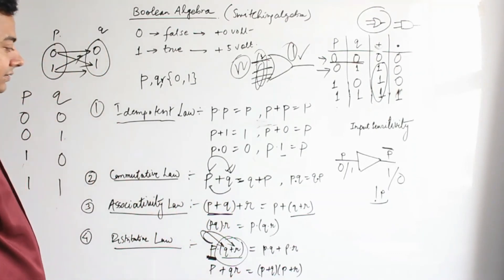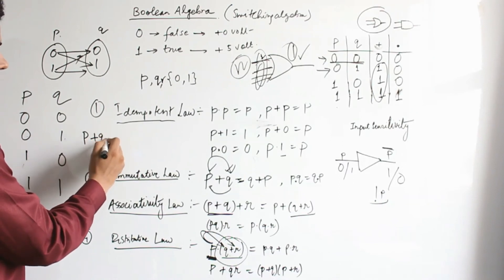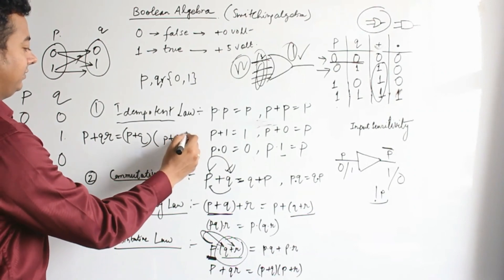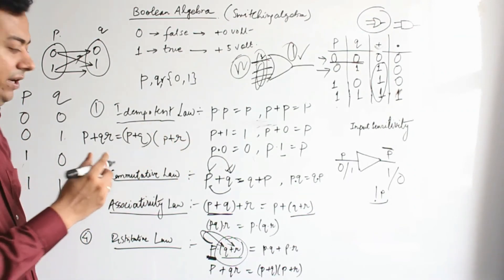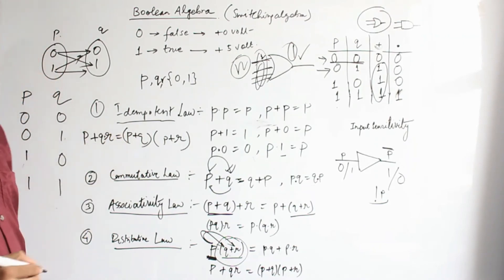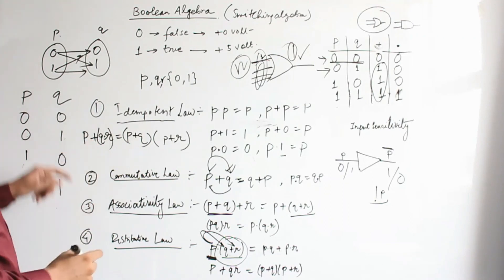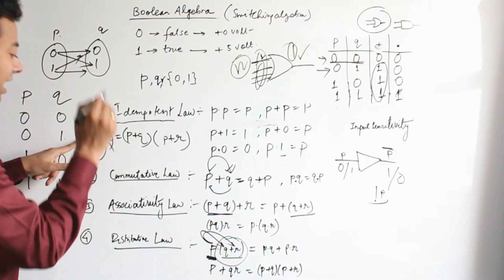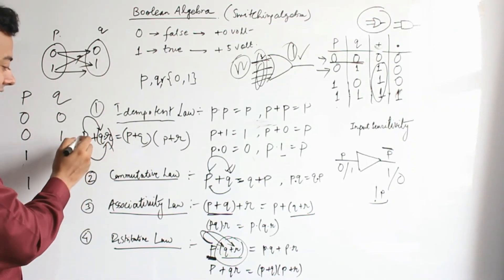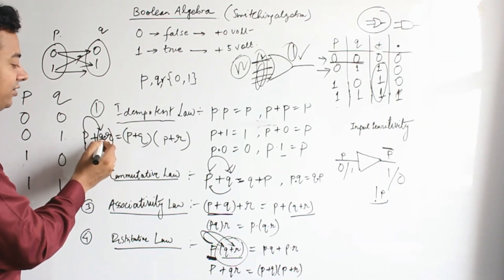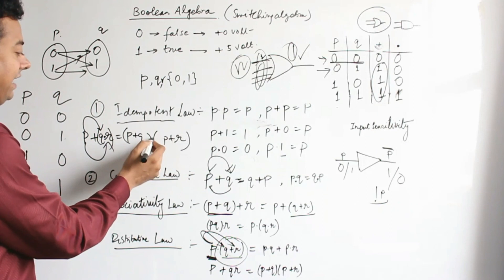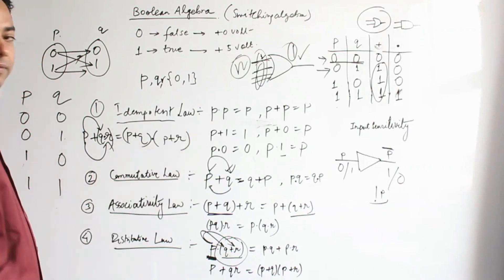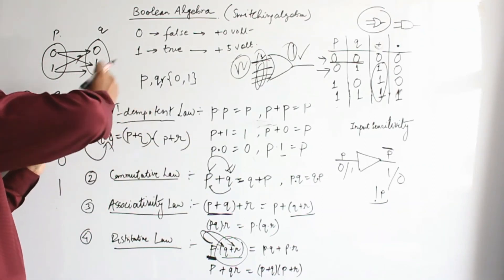The second form of distributive law is: P + (Q · R) = (P + Q) · (P + R). Here the operation between Q and R is AND (dot). You distribute P over Q and R using OR: P + Q and P + R, and the operation between them becomes AND. So P + QR = (P + Q)(P + R).